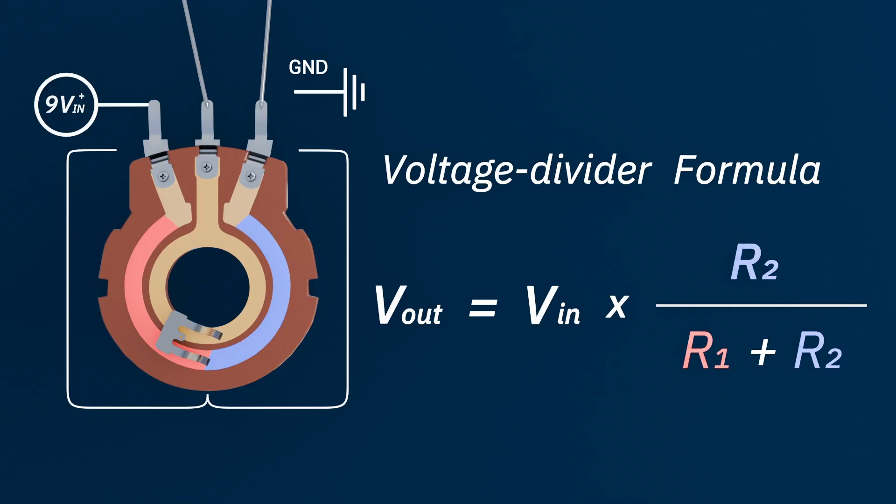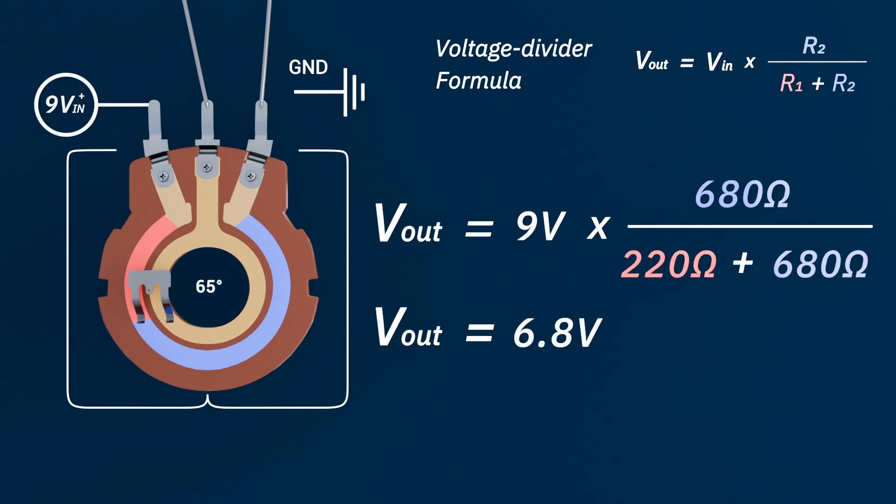This is essentially how a potentiometer works. So if the wiper sits closer to the top terminal, R2 is large, the ratio is large, and V out is close to V in. Move the wiper toward ground, R2 becomes smaller relative to R1, and V out drops smoothly toward zero.